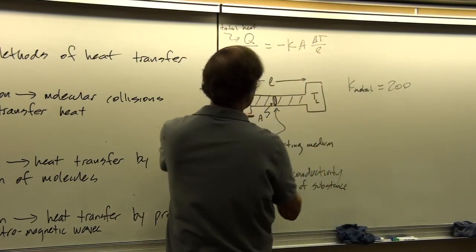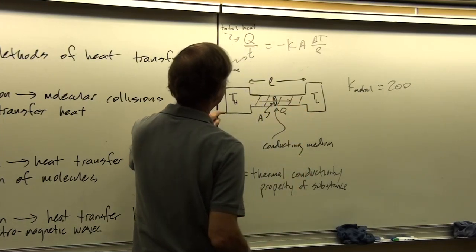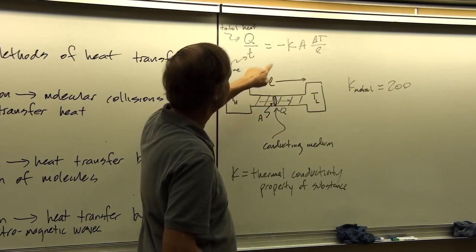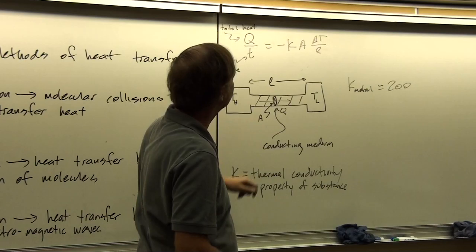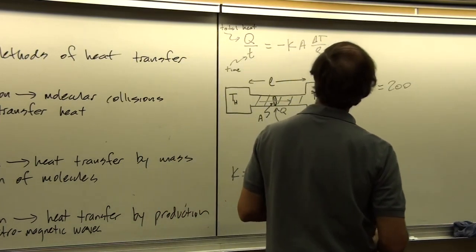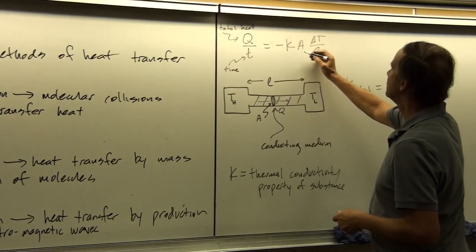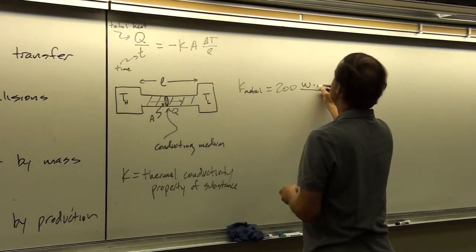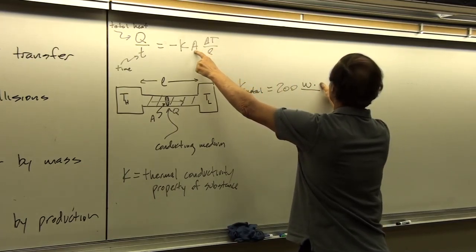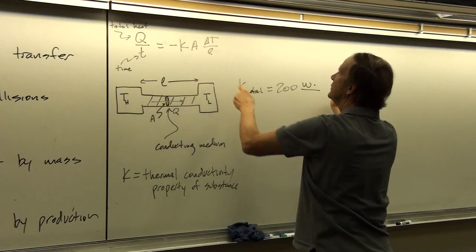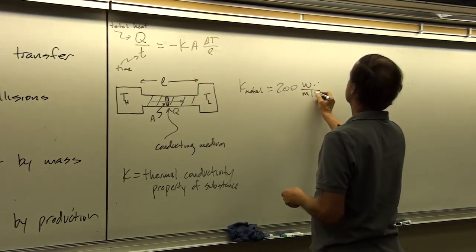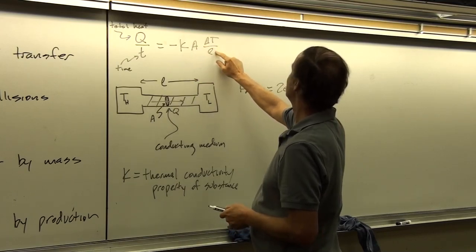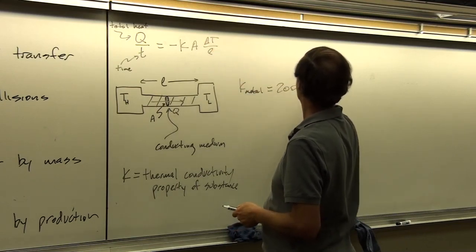A is the cross-sectional area, and we know heat goes from hot to cold, so the change in temperature is negative because we're going from higher to lower — that's what the negative sign means. K is our thermal conductivity, and if this has units of joules per second, or watts, then K has units of watts per meter·degree Kelvin. So the units work out: K in watts per meter·degree Kelvin, L in meters, and ΔT in degrees Kelvin.